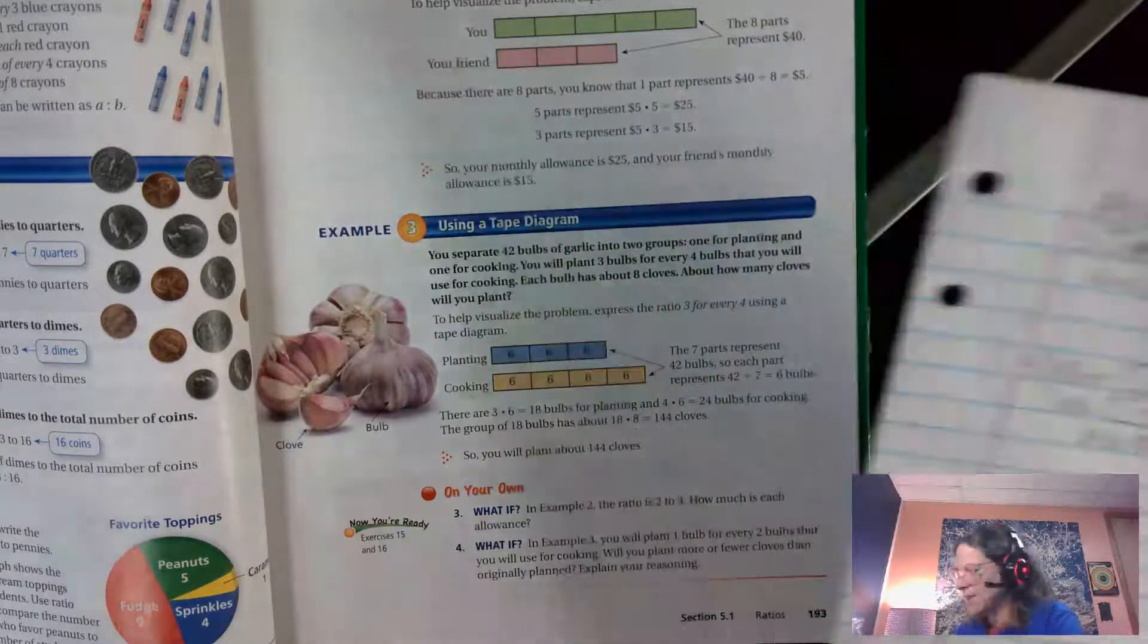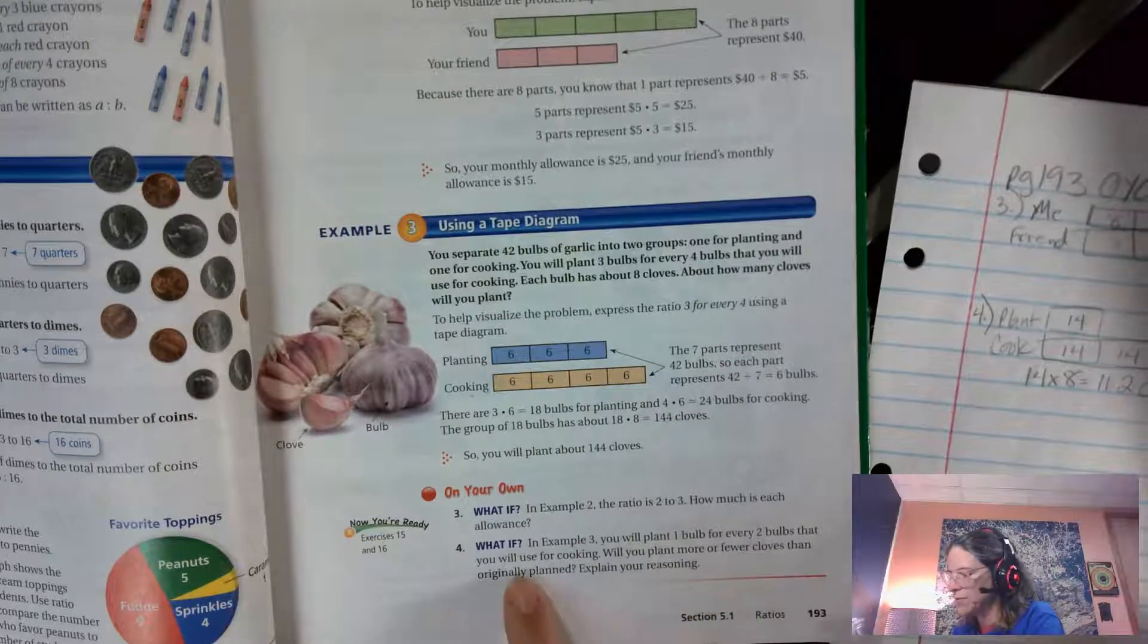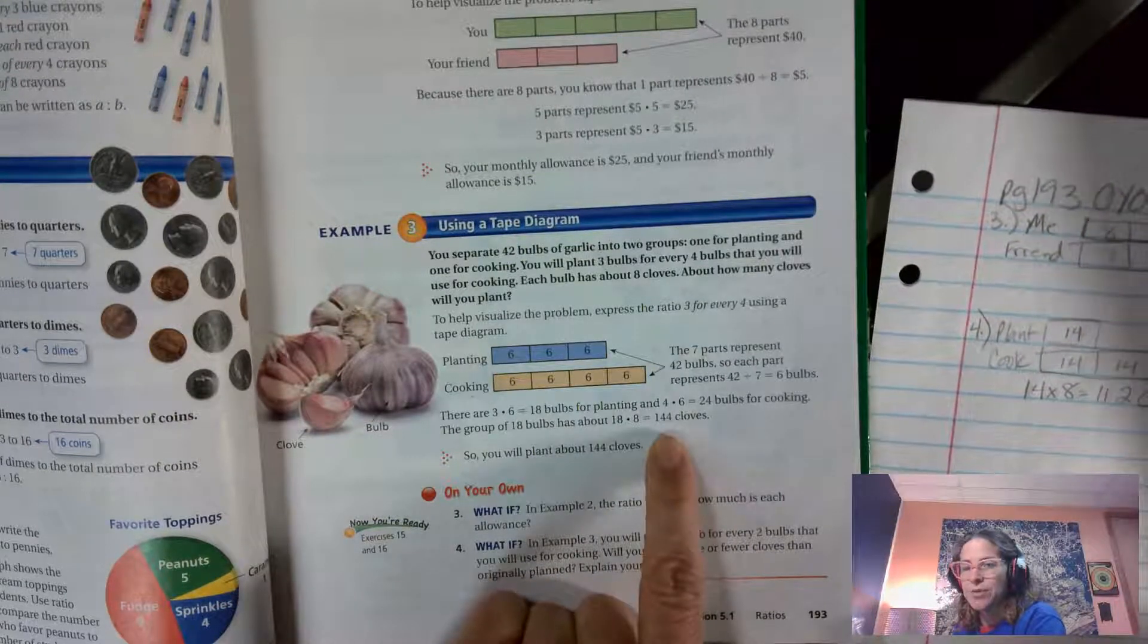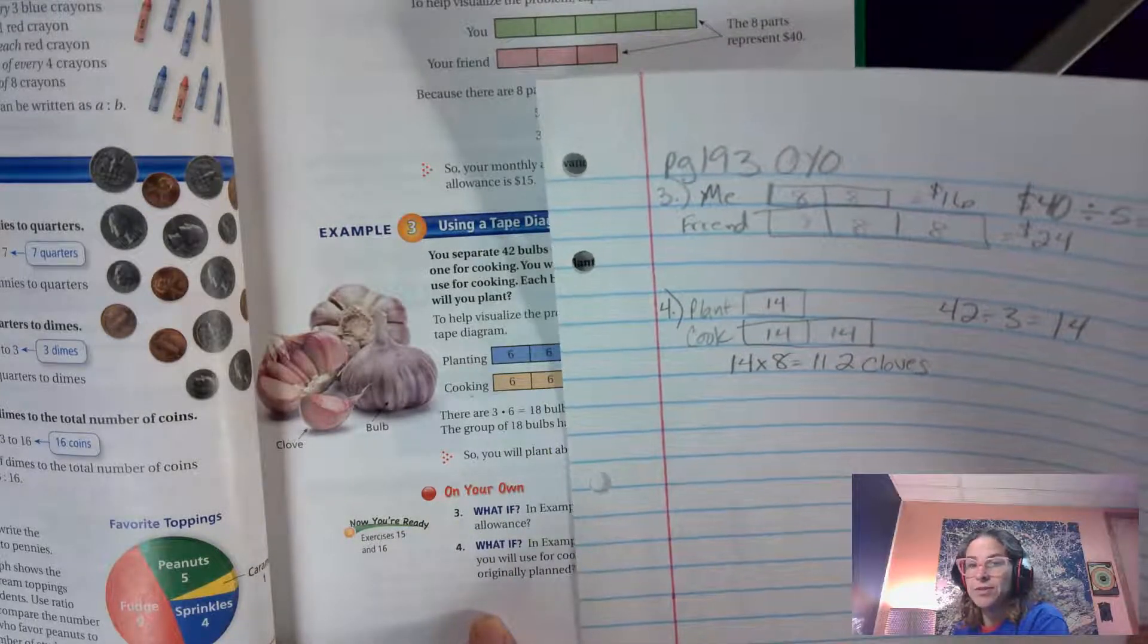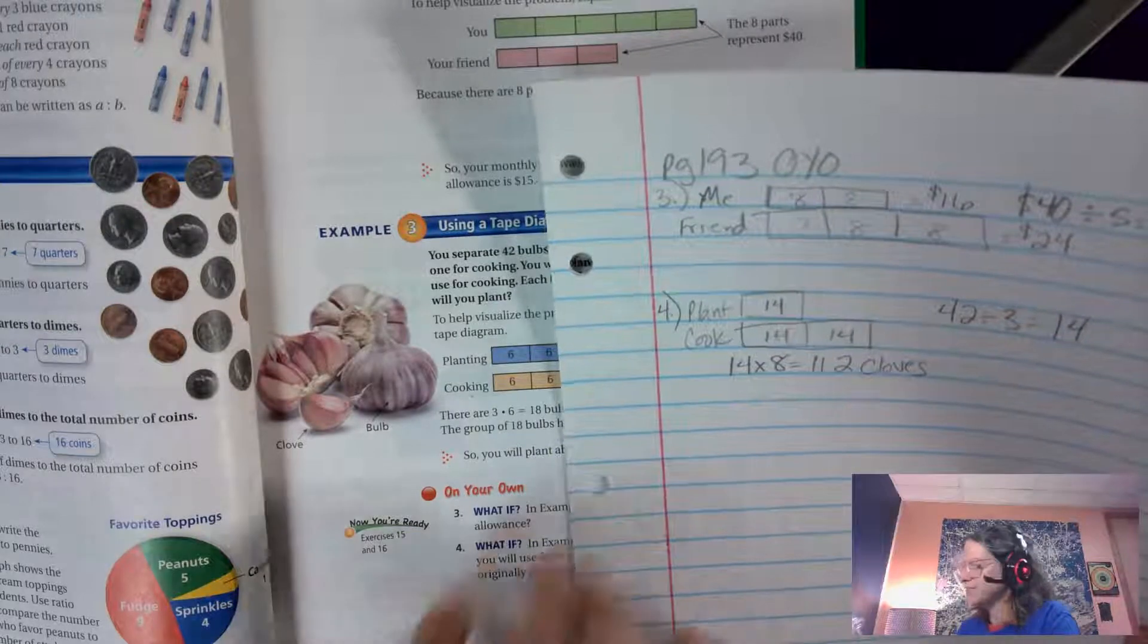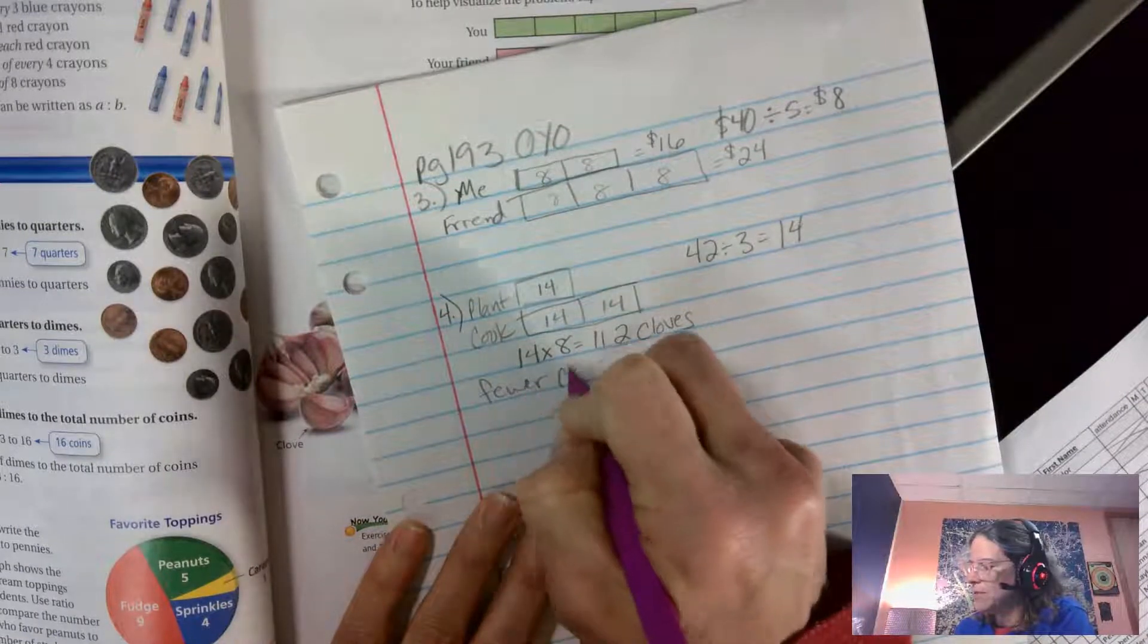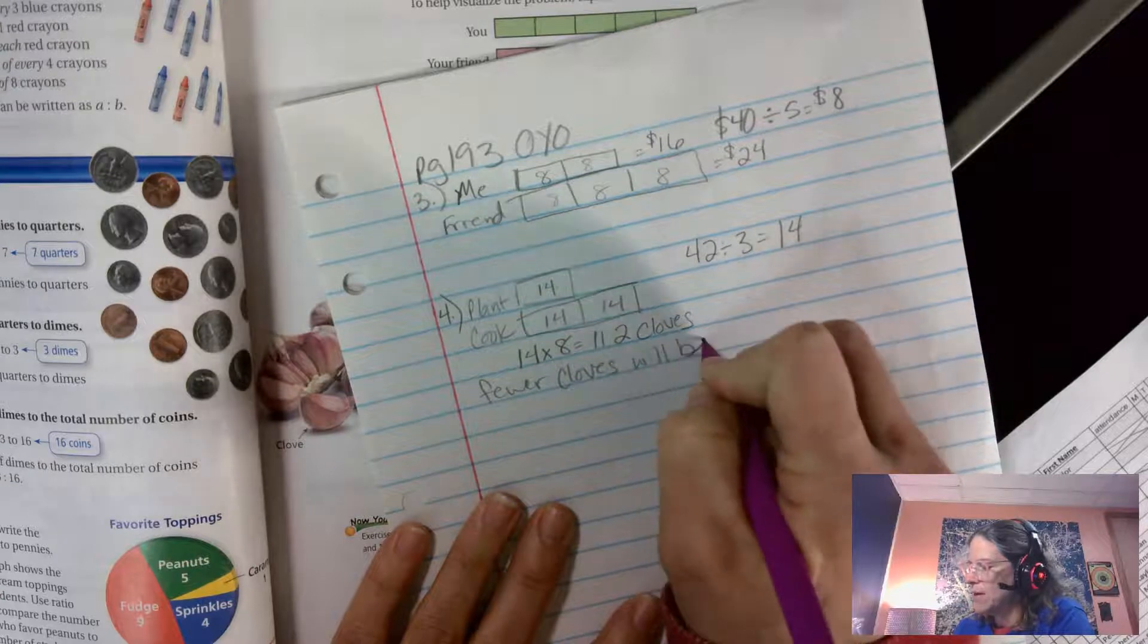Because the question is will you plant more or fewer cloves than originally planned? Here I planned 144 cloves, but in this on your own I only planted 112. So fewer cloves will be planted.